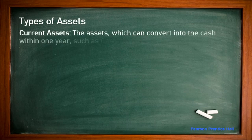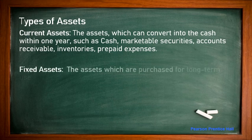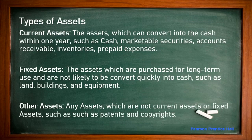Regarding types of assets: current assets can convert into cash within a year — cash, marketable securities, accounts receivable, inventories, and prepaid expenses. Fixed assets are purchased for long-term use and not quickly converted to cash — land, building, and equipment. These are assets purchased for long-term business use, not for resale. Other assets include patents, copyrights, and goodwill.